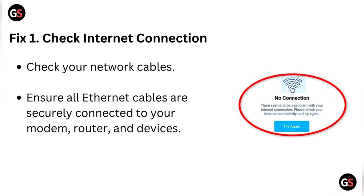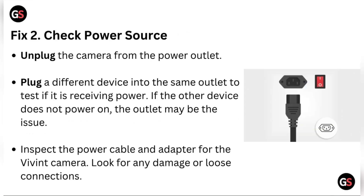Fix two: check power source. Unplug the camera from the power outlet and plug a different device into the same outlet to test if it is receiving power. If the other device does not power on, the outlet may be the issue. Also inspect the power cable and adapter for the Vivint camera and look for any damage or loose connections.